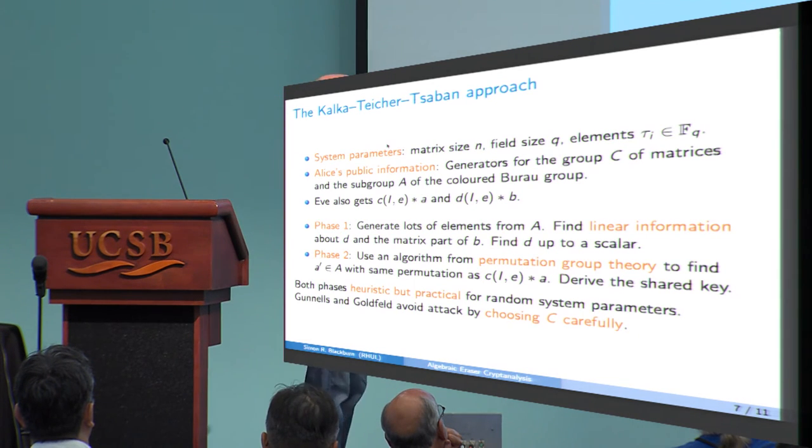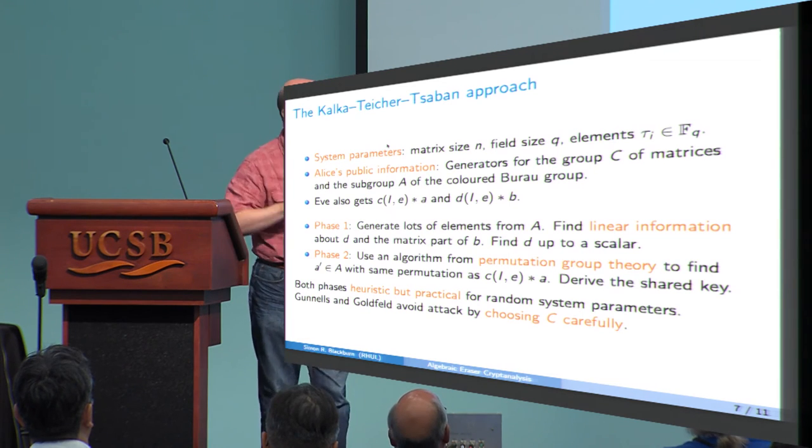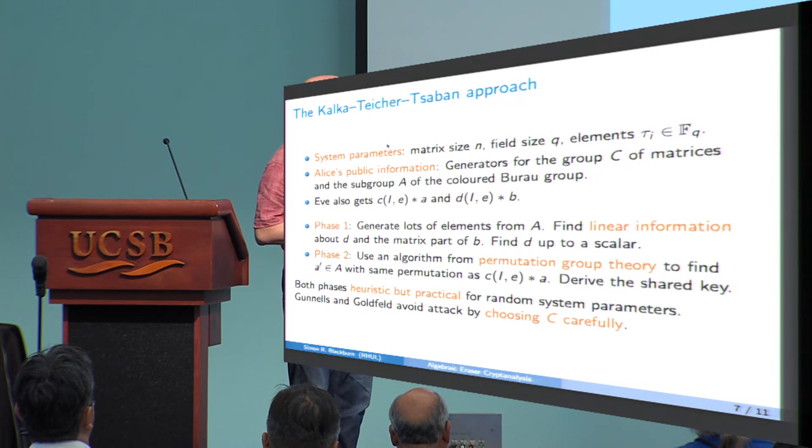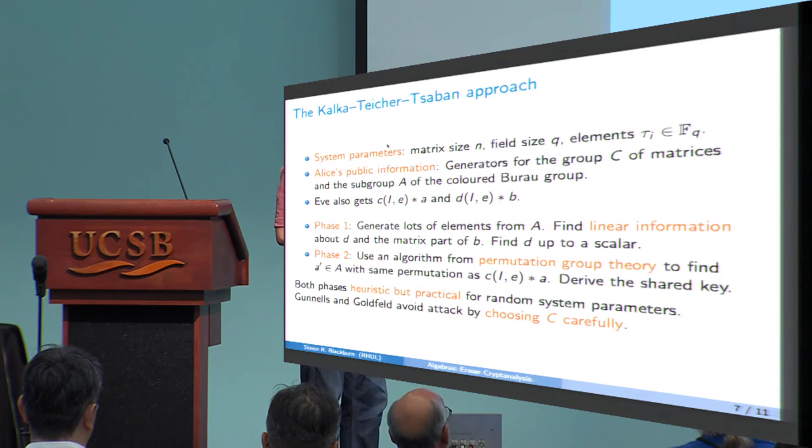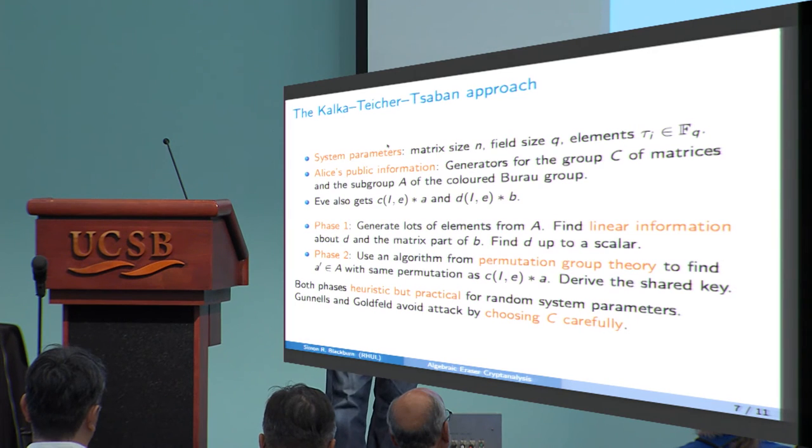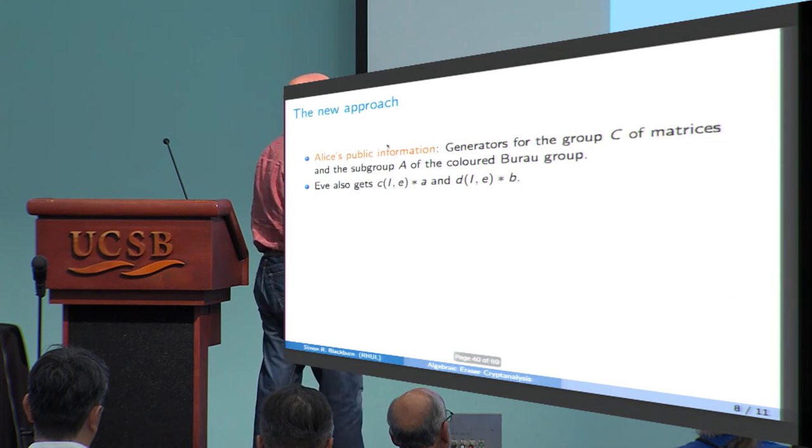So Gunnels and Goldfeld responded to this attack, and their response is saying, choose C very carefully. We haven't said this before, but we're actually going to choose C carefully. And what happens here is if you choose C carefully, all this linear information basically collapses, you don't get enough linear relations. So even though for generic parameters, this linear information gives you D up to a scalar, if it's a carefully chosen subgroup C, it doesn't give you enough information.